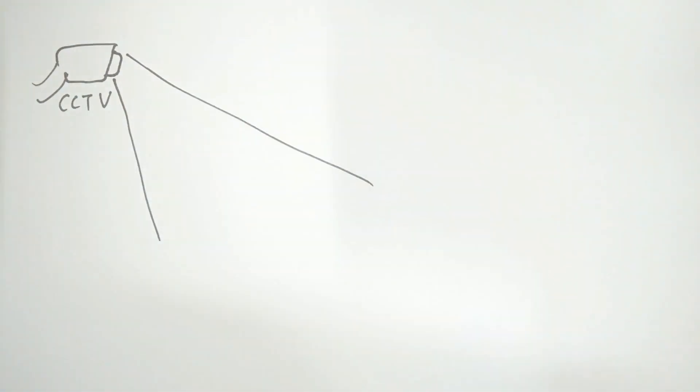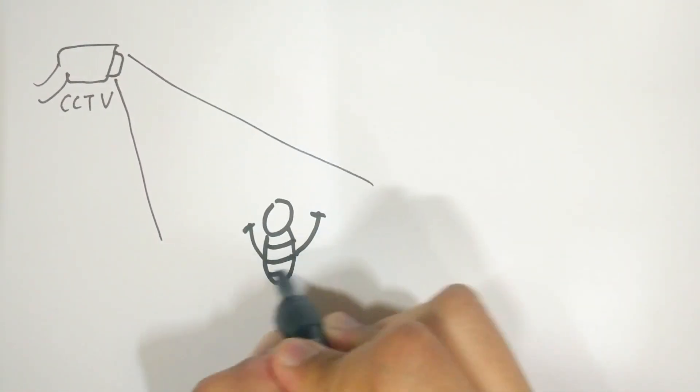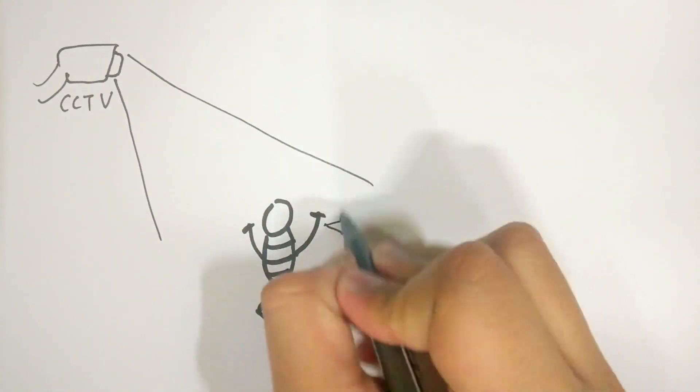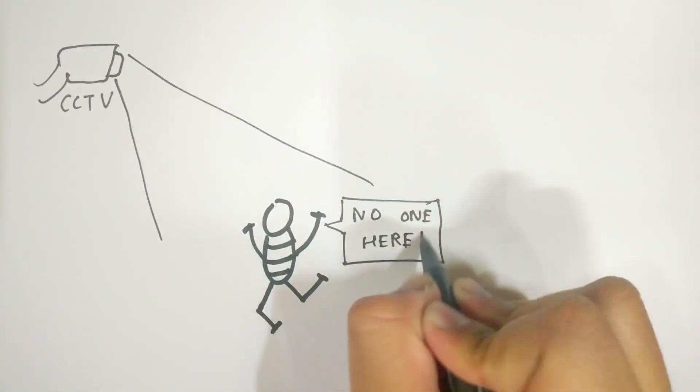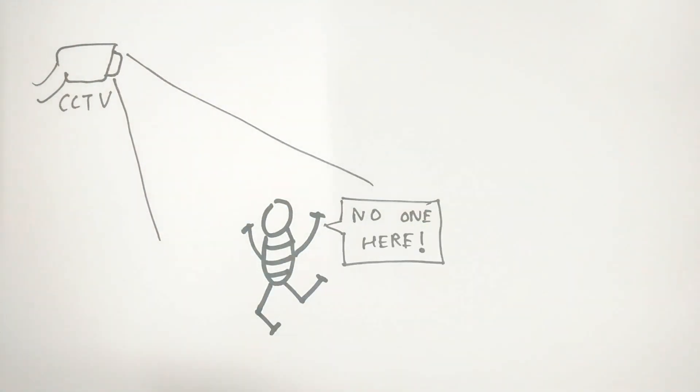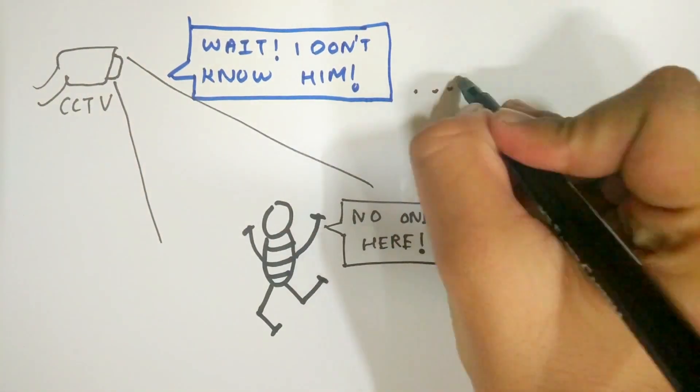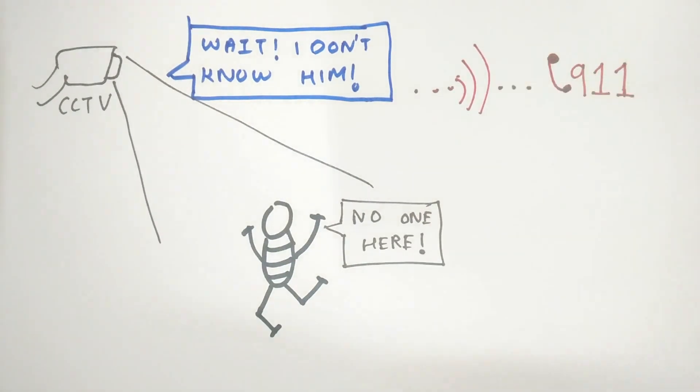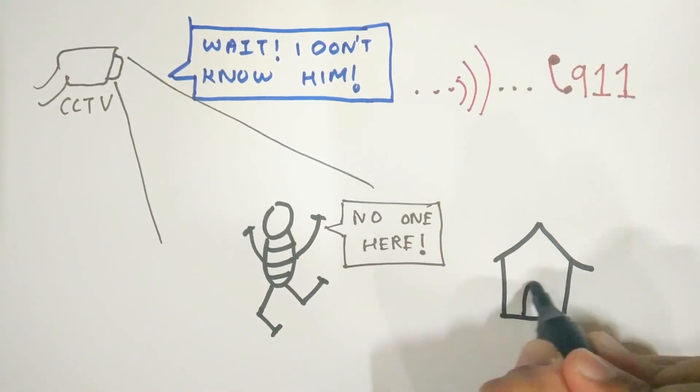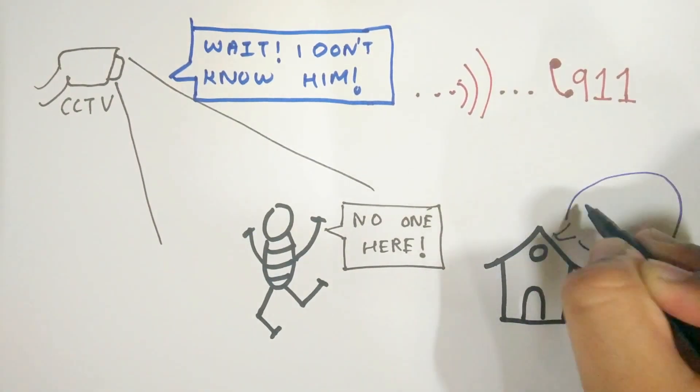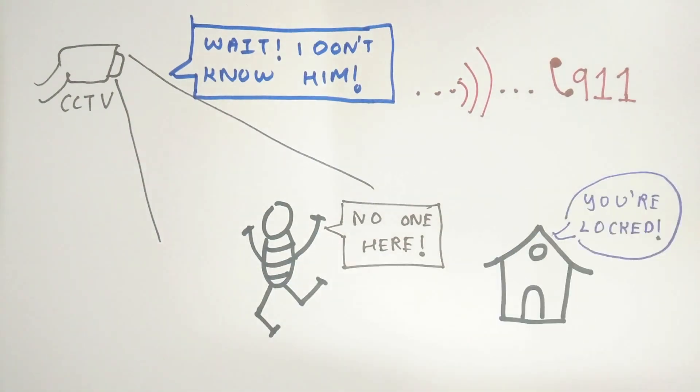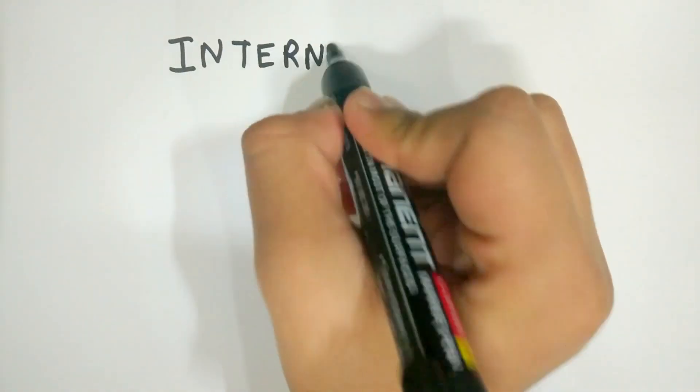But just like every other technology, the Internet of Things also has one major drawback: security. Poorly secured devices are vulnerable to cyber attacks, and thieves can know whether or not you are in the house. But we are working on it. The things can also identify faces and let the nearest police station know when an unknown suspicious person is in the house. The house can also lock the person inside so he cannot escape. No worries.